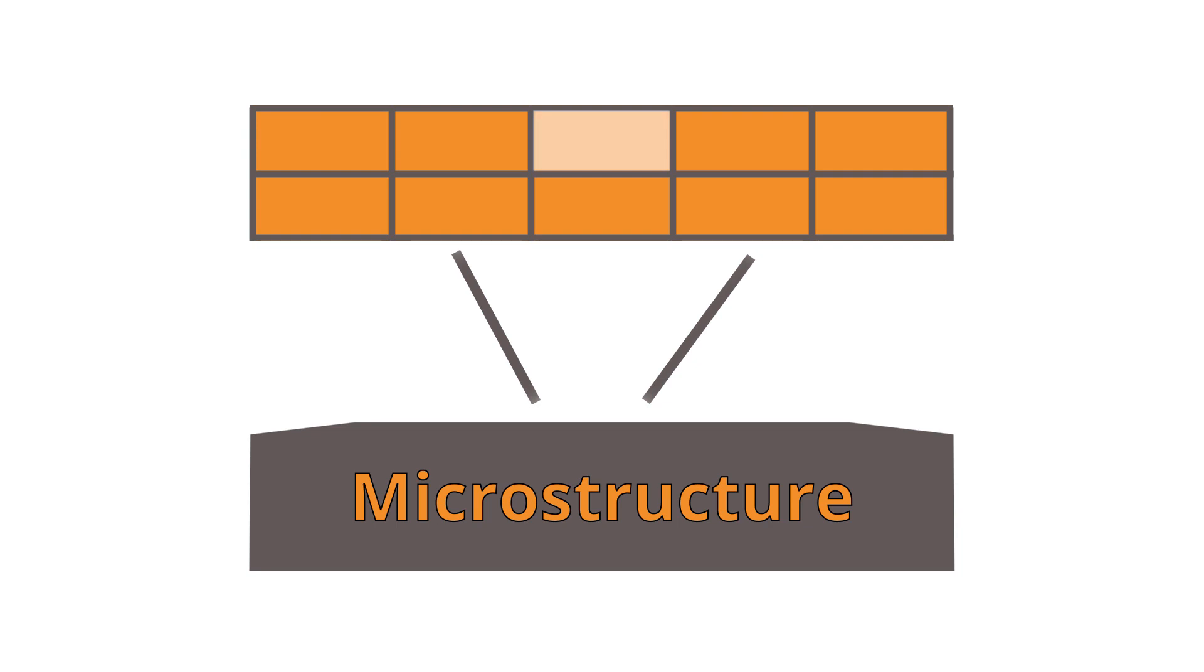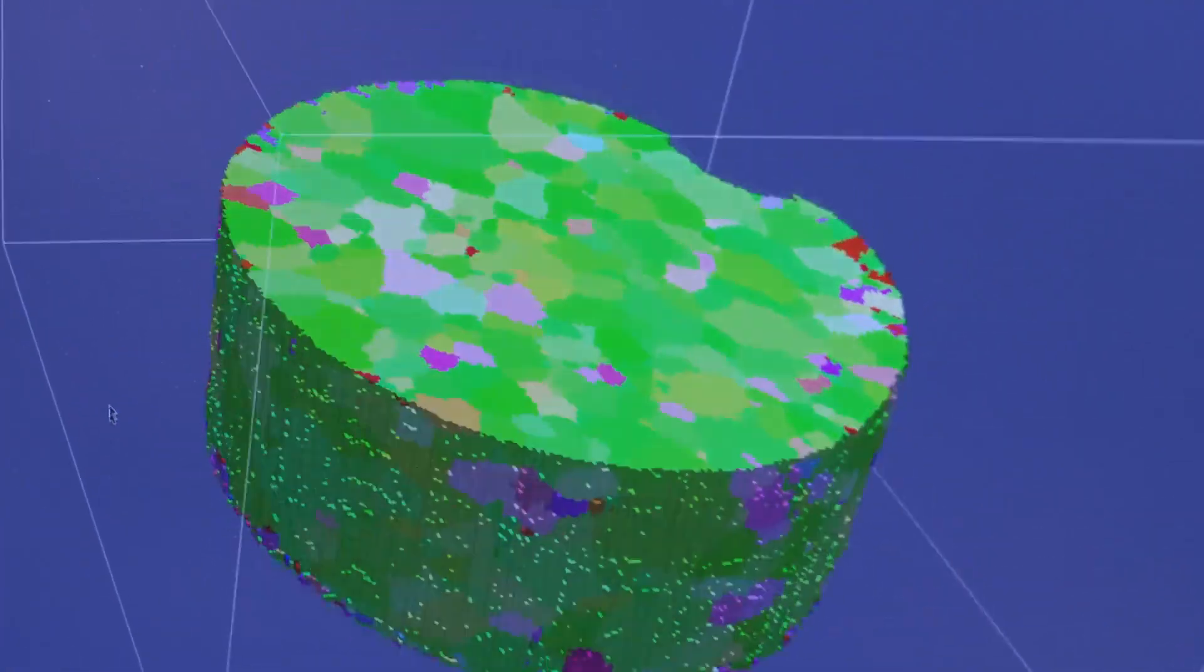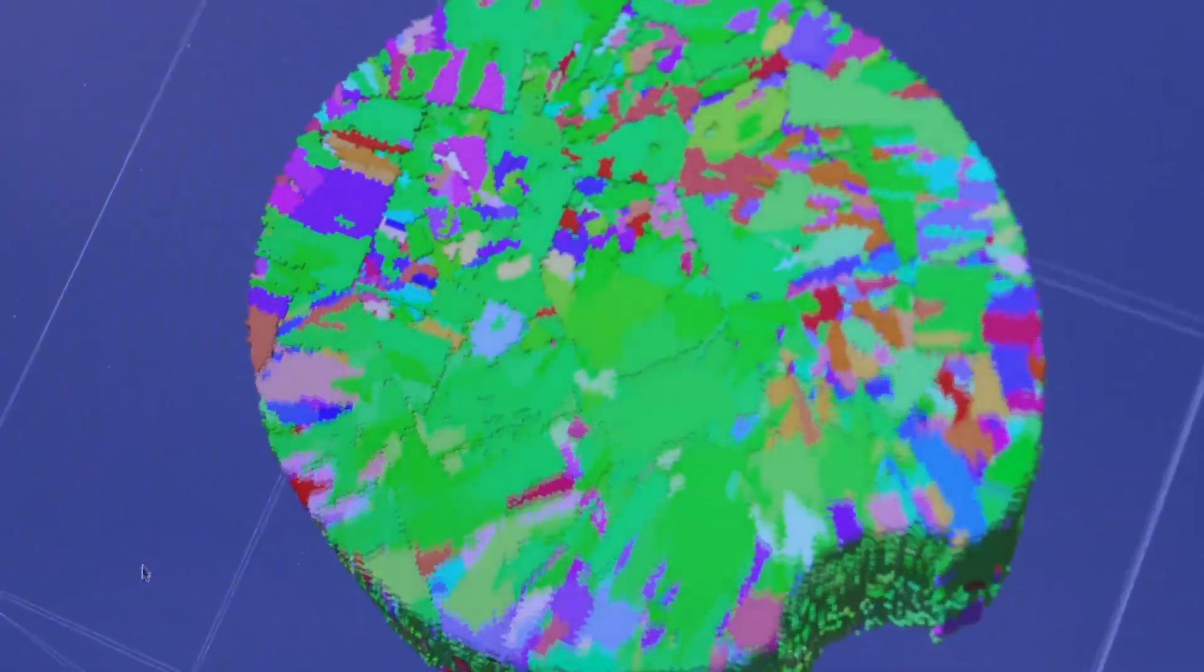The microstructure of the material you can think of as its internal structure, almost like a brick and mortar type structure. And the size of the brick and the mortar determines its properties. So without control of that, you actually lose the performance control. So we design and try to control the microstructure during processing for better applications.